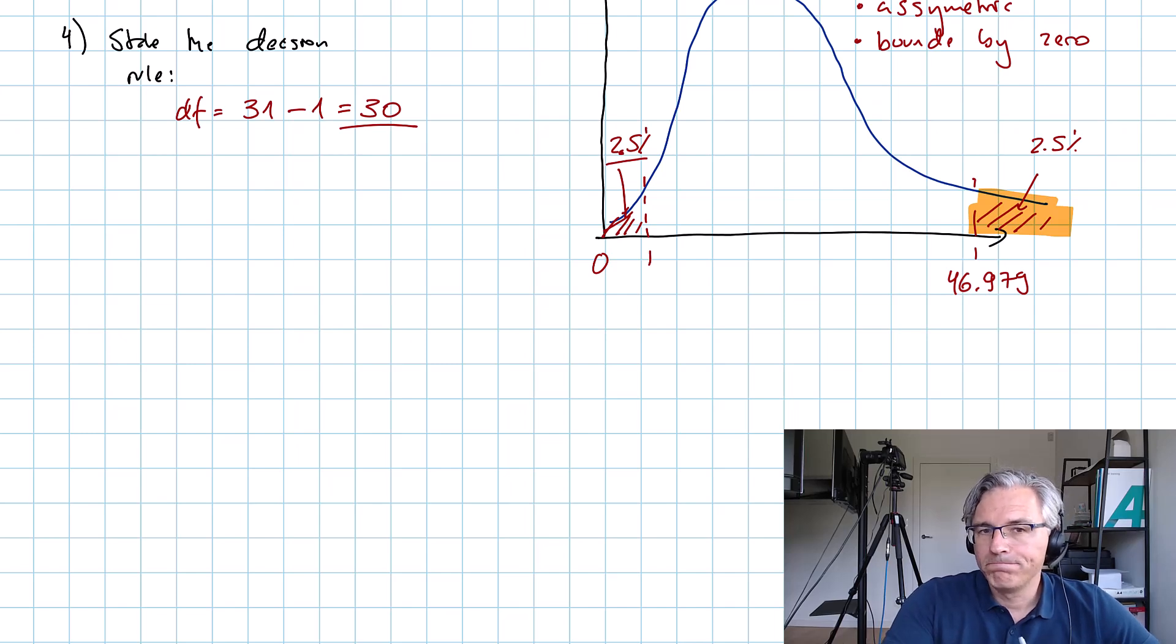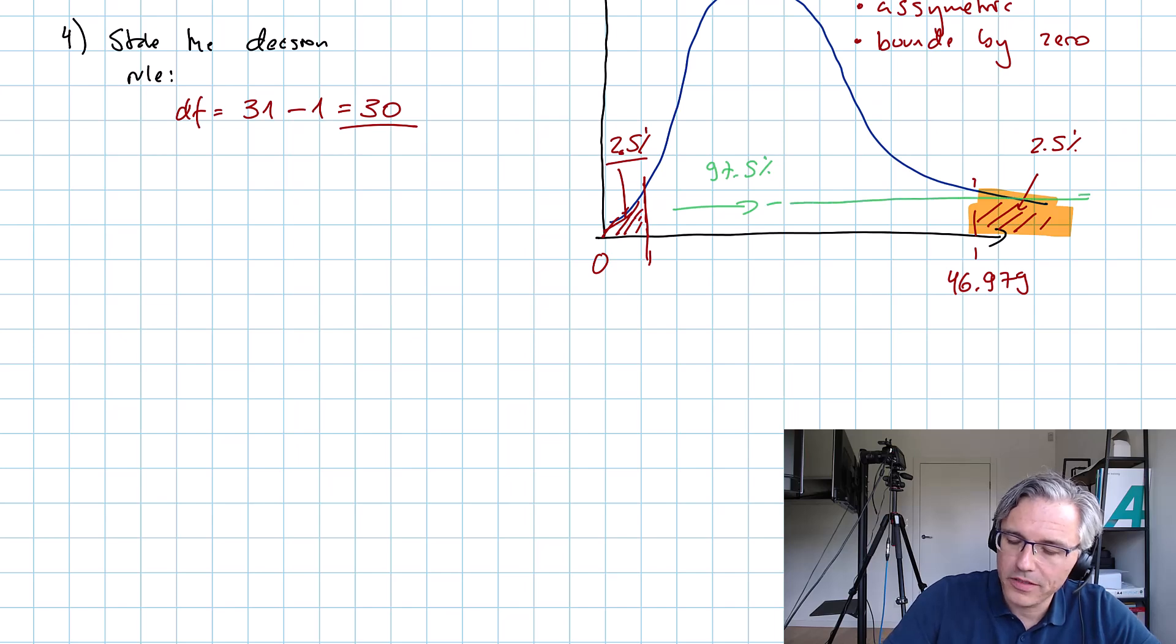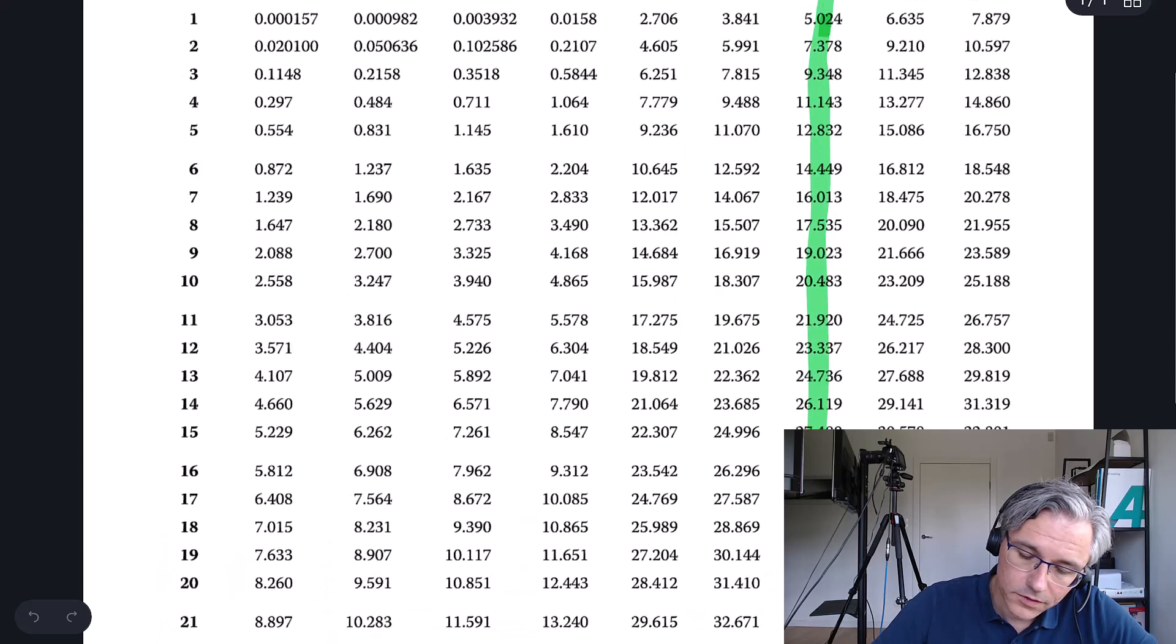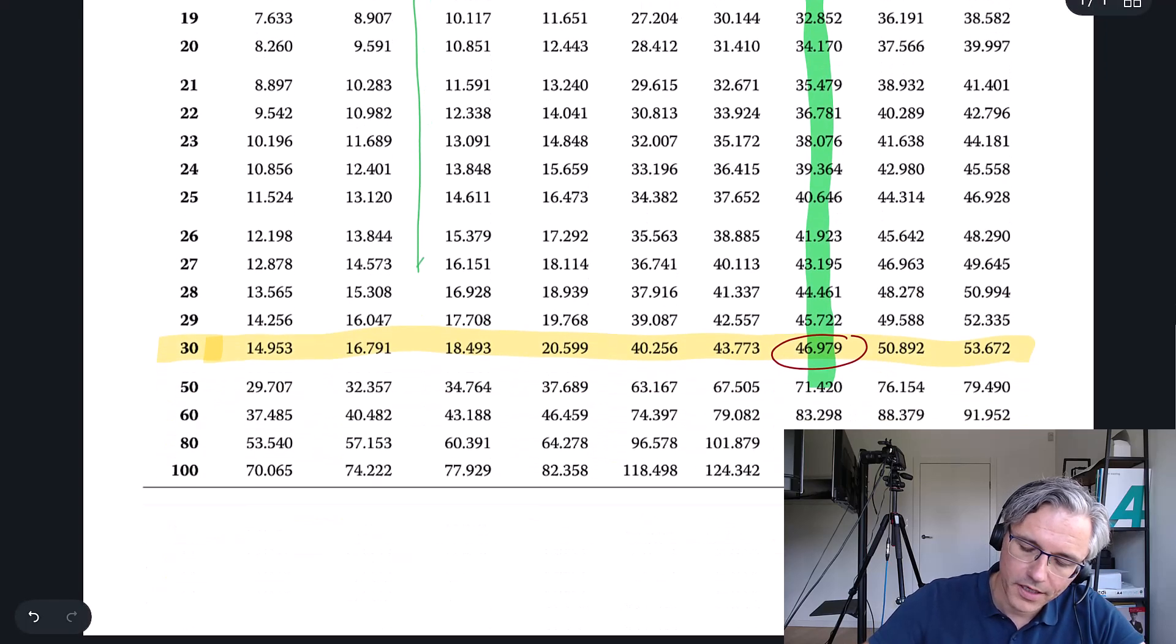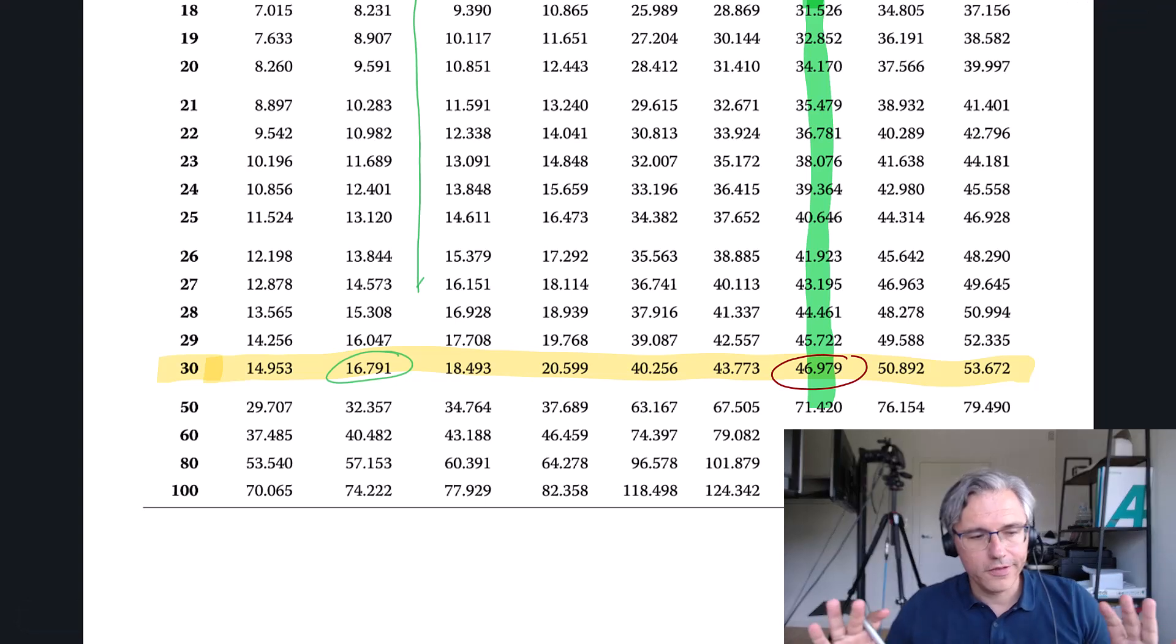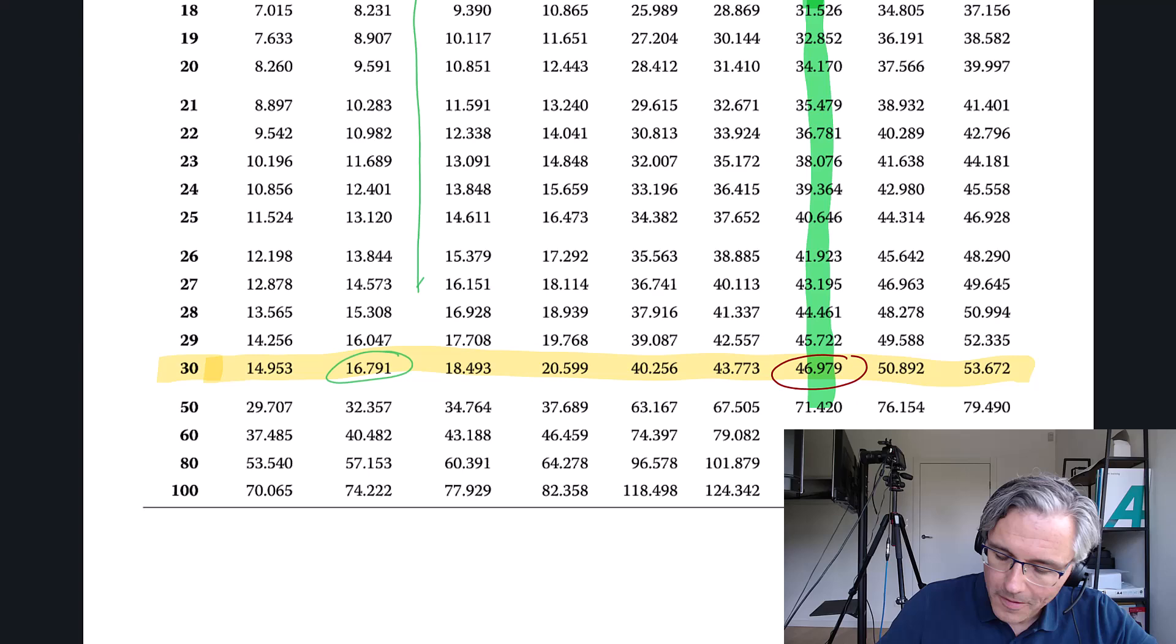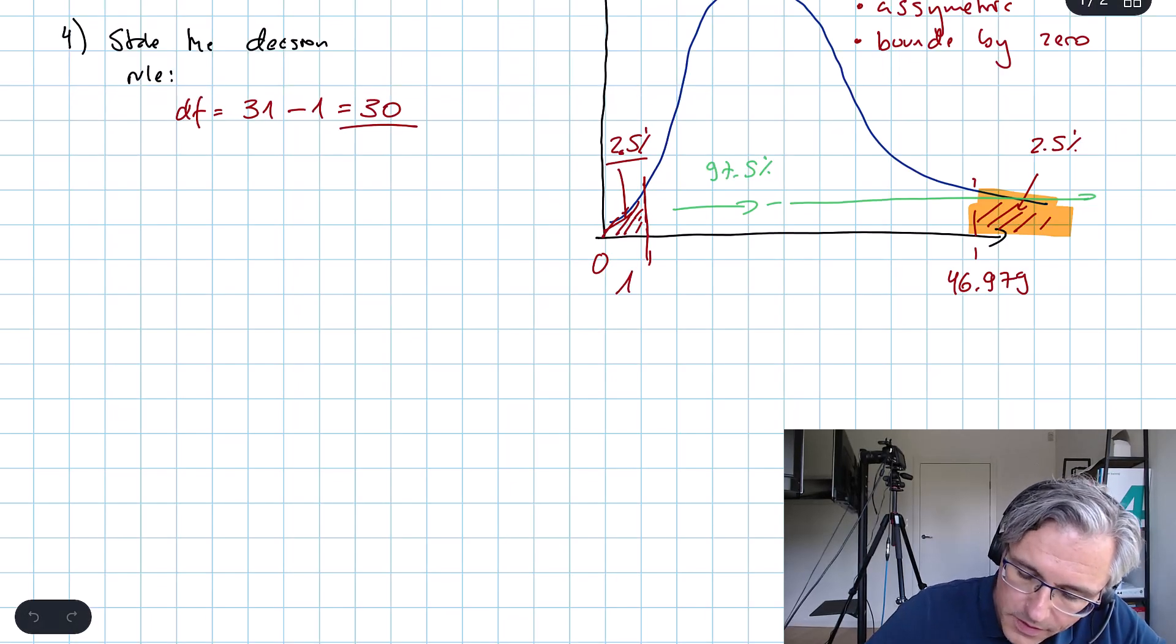I also need a critical value on the left-hand side. You have to reverse engineer it. If there is going to be two and a half percent probability left in the left-hand tail, then what's to the right is going to hold 97.5% of probability. Back to the table, that's the column I need, which reads 97.5% probability left to the right. Let's go down in this column, and we get to a value at the intersection of 30 degrees of freedom: 16.791.